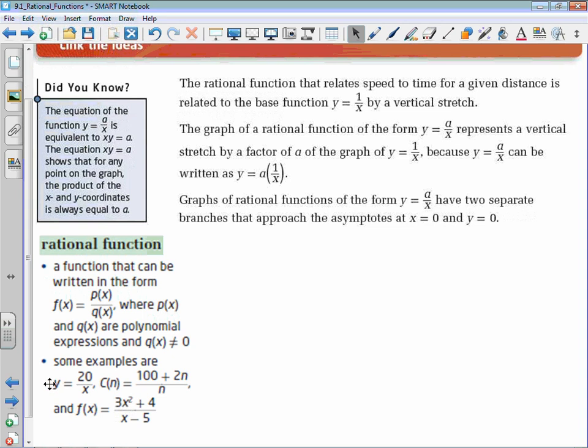So they give a couple examples here. y equals 20 over x is a polynomial divided by a polynomial. Typically, when we talk about rational functions, if the denominator is a 1 or a 2, we generally don't call it rational. So really, the denominator needs to have a variable in it.